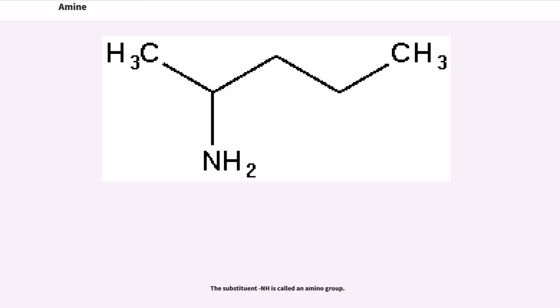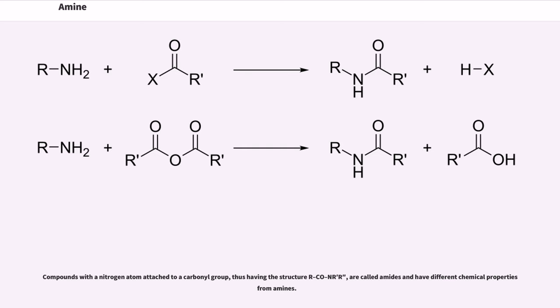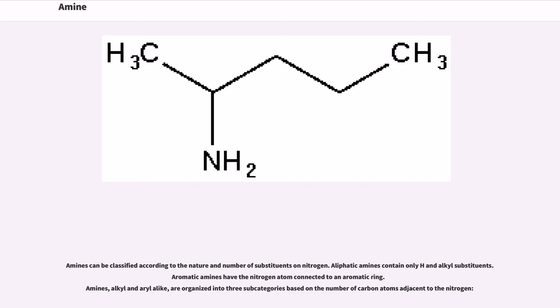The substituent NH2 is called an amino group. Compounds with a nitrogen atom attached to a carbonyl group, thus having the structure RCONR'R'', are called amides and have different chemical properties from amines. Amines can be classified according to the nature and number of substituents on nitrogen. Aliphatic amines contain only H and alkyl substituents. Aromatic amines have the nitrogen atom connected to an aromatic ring. Amines, alkyl and aryl alike, are organized into three subcategories based on the number of carbon atoms adjacent to the nitrogen.